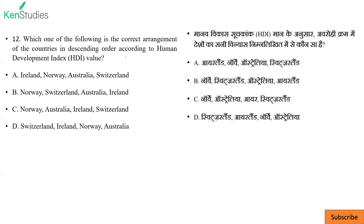Next: which one of the following is the correct arrangement of countries in descending order according to Human Development Index (HDI) value? तब तत्कालीन समय में: Norway first था, Switzerland, Australia, और Ireland. 2020 वाले HDI report में: Norway first, Ireland second, Switzerland third, फिर Hong Kong, Iceland, Germany — ये ranking में थे.